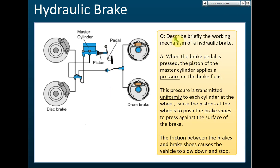This is a question that may be asked in your test or exam: describe briefly the working mechanism of the hydraulic brake. When the brake pedal is pressed, the piston of the master cylinder applies pressure on the brake fluid. This pressure is transmitted uniformly to each cylinder at the wheel according to Pascal's principle. This causes the pistons at the wheels to push the brake shoes, and the friction between the brake shoes and the surface causes the vehicle to slow down and stop.